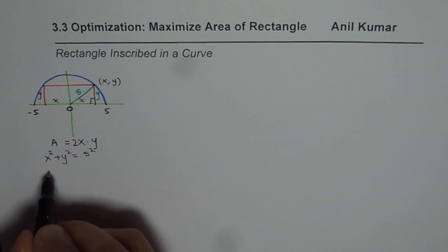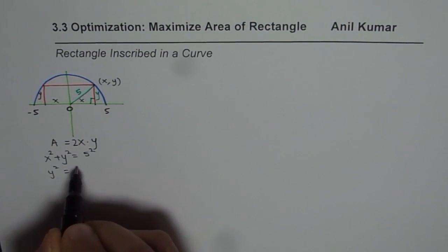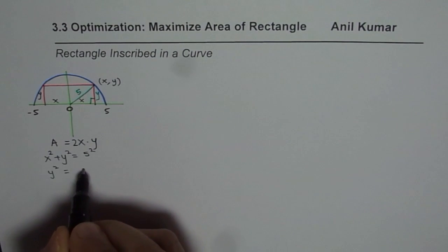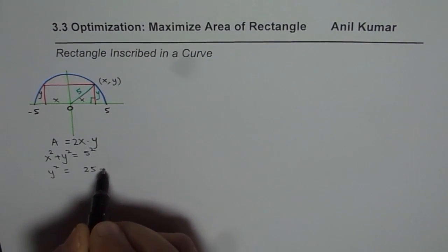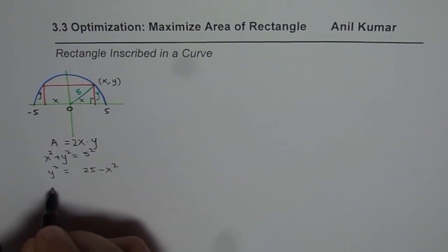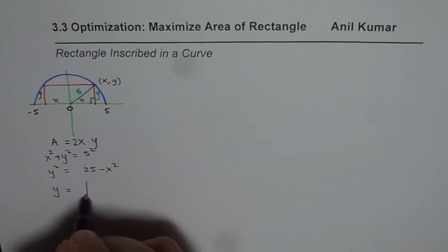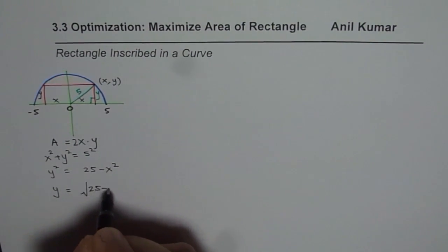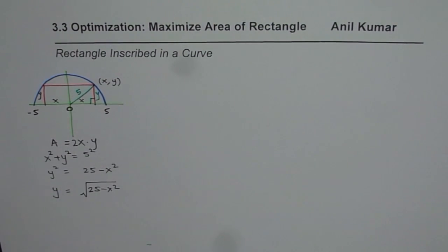From here we can write y² = 25 − x², or y = √(25 − x²). We will take positive values since distances are positive.